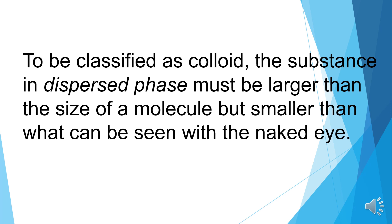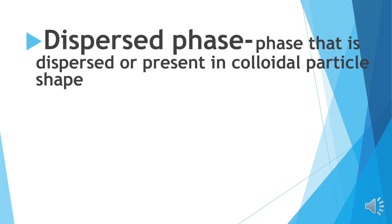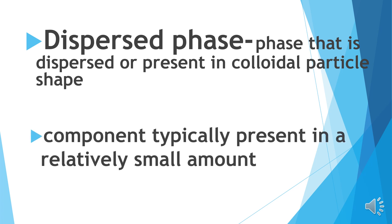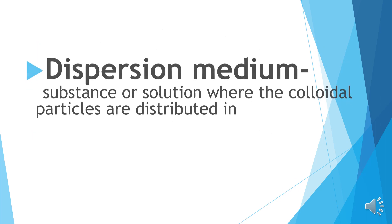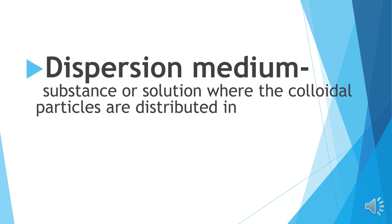The dispersed phase is the phase that is dispersed or present in colloidal particle shape — it is the state of matter (solid, liquid, or gas) of the substance being dispersed. It is a component typically present in a relatively small amount. The dispersion medium is the substance or solution where the colloidal particles are distributed in — it's either liquid or gas.